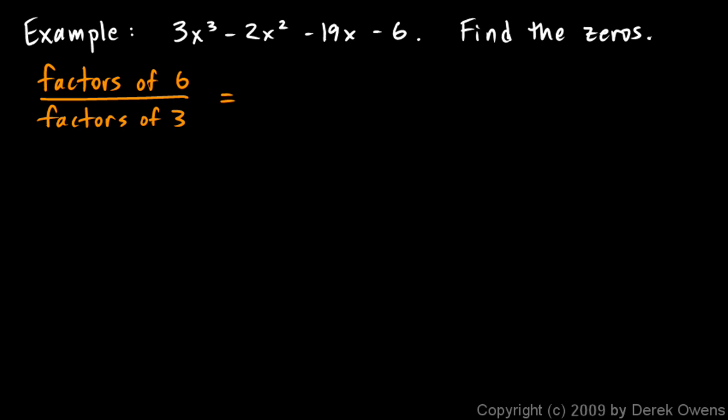That will give me a list of numbers, and then we could use positive or negative factors. So what are factors of 6? Well that's pretty easy, 1, 2, 3, and 6. And factors of 3 are really easy, 1 and 3.